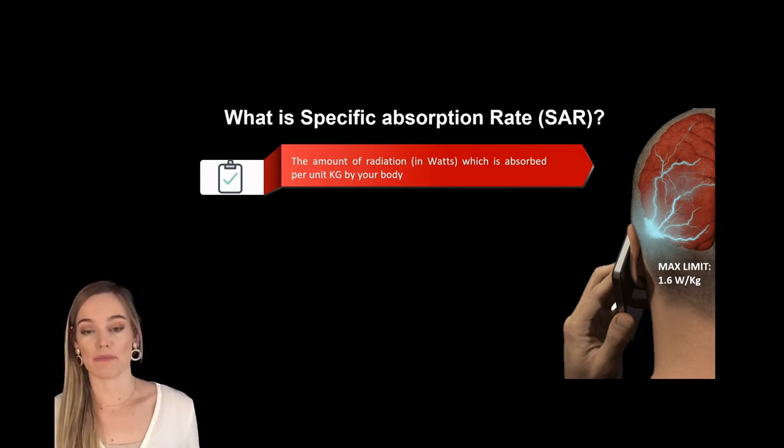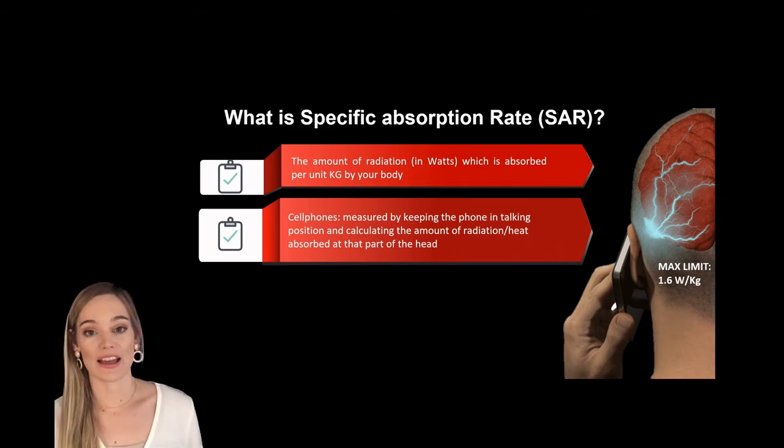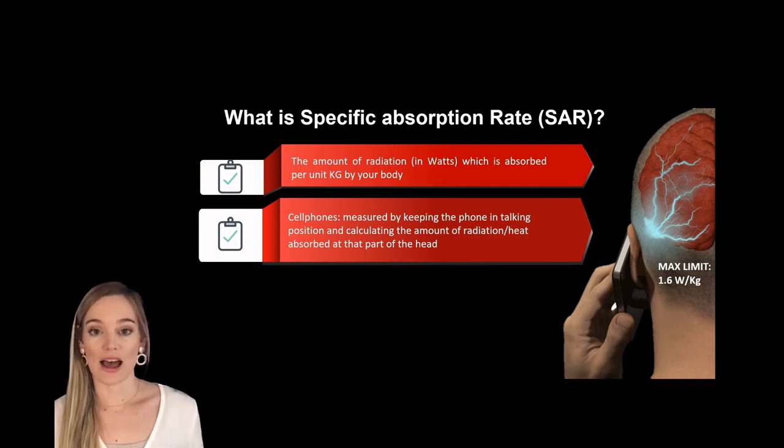So basically how they measure the SAR calculation is they take either a hearing aid or a cell phone and they put it on the ear or by the ear as how you would hold a cell phone if you were on a phone call for some time and then they measure the amount of heat that is emitted into that area of the head where the hearing aid or the cell phone is sitting.